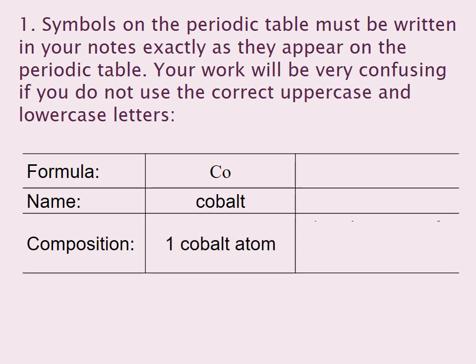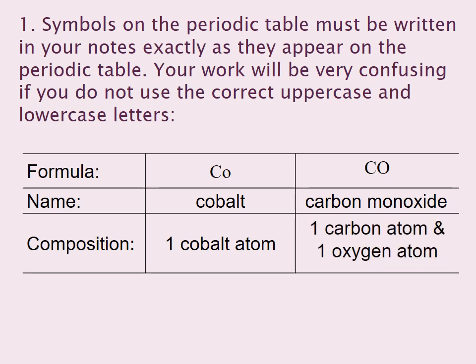You have one cobalt atom. But if instead of writing capital C small o, you write capital C capital O, that is called carbon monoxide. That means you have one carbon atom and one oxygen atom — the two are very different from one another. Cobalt is a metal; carbon monoxide is a poisonous gas.